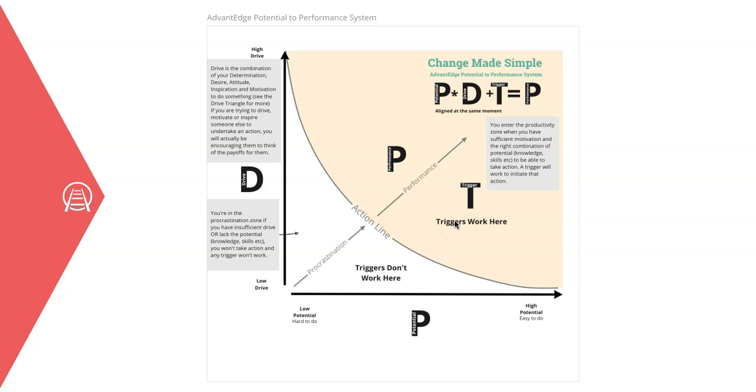In this example, they will donate to the dog shelter. However, if they are anywhere below the action line when triggered, they will not perform the action. They will remain in the procrastination zone.